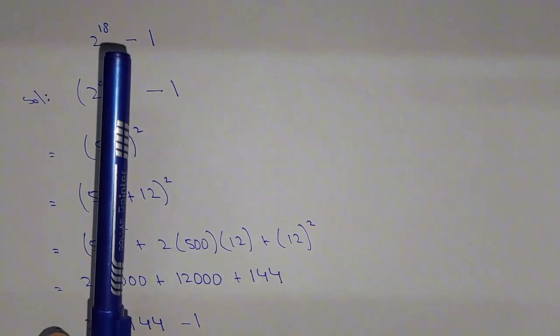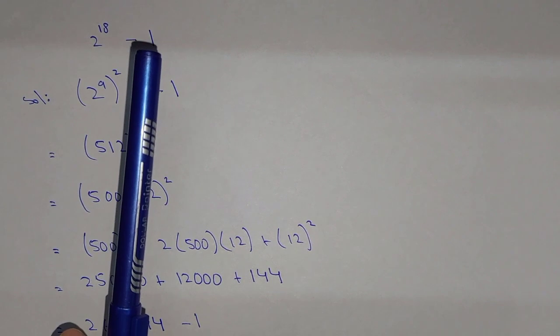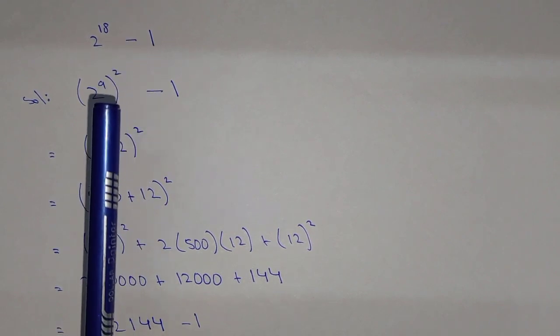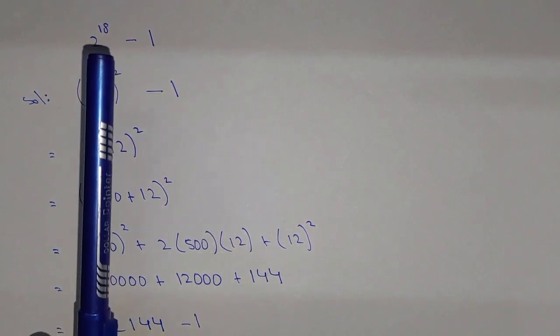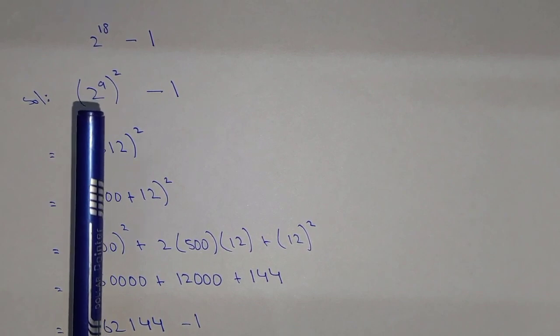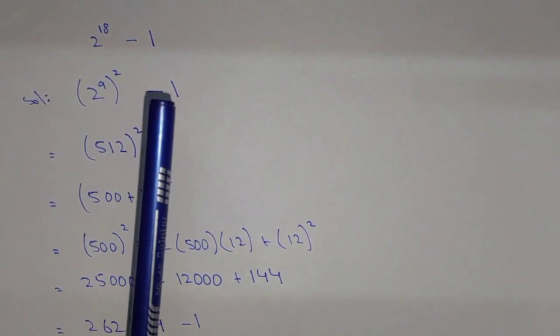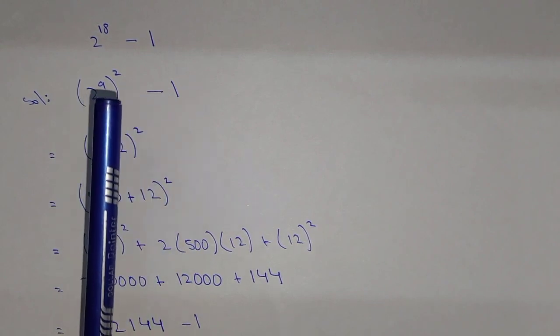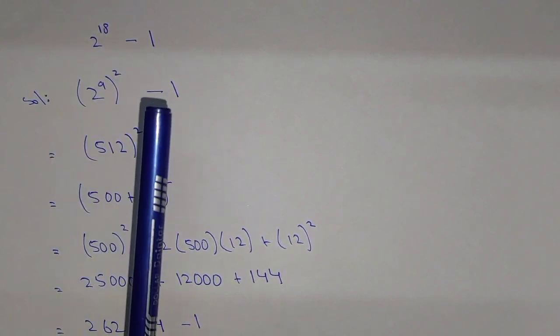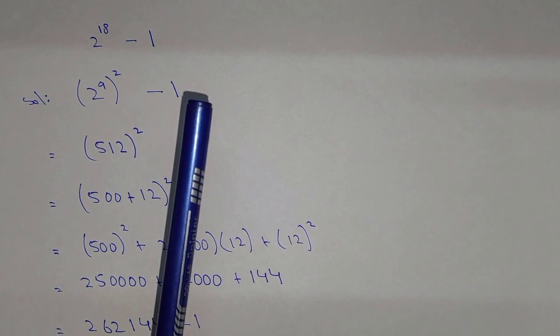There can be many ways to solve this, but we will find the easiest way. We can write 2^18 as (2^9)^2 minus 1. Now leave minus 1 for a while. First we will solve this, and then we will minus 1 at the end.